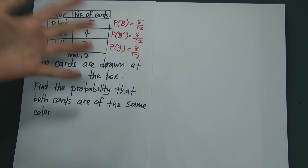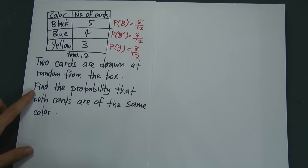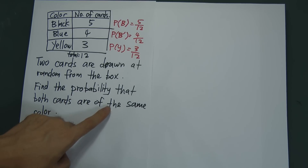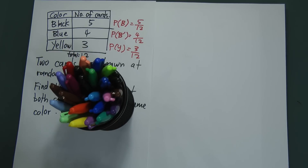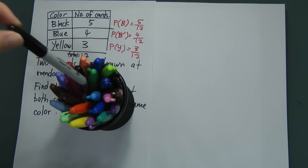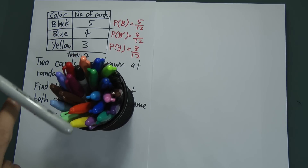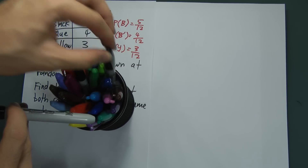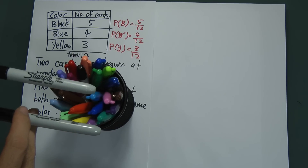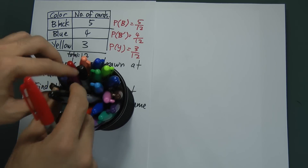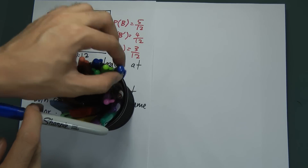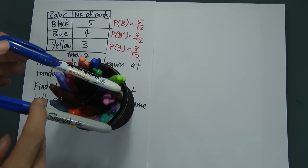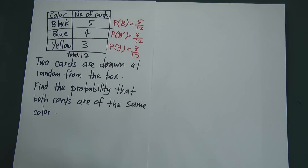Now, find the probability that both cards are of the same color. Imagine you have a box. If you draw the first card and it's black, what's the probability the second card is also black? Or if you have 12 cards, what is the probability the first card is blue and the second card is also blue? That's the meaning here.